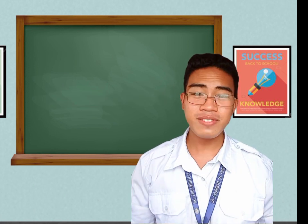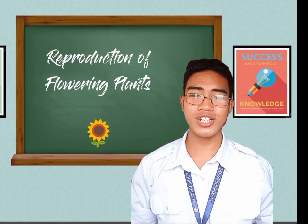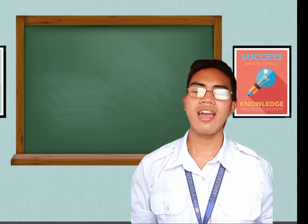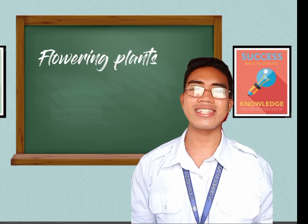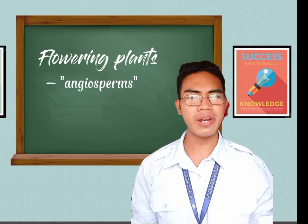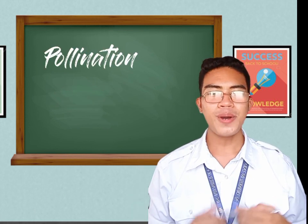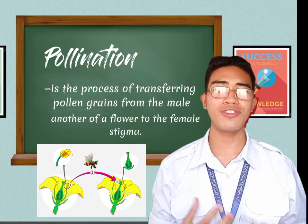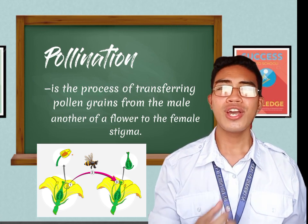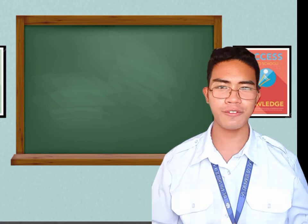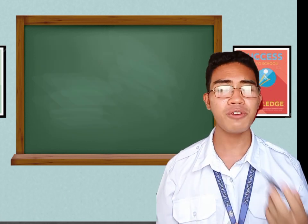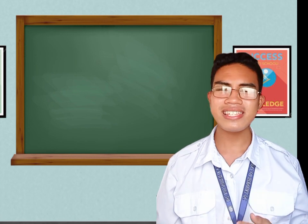Very good. Our previous topic is about the reproduction of flowering plants. Flowering plants are also called angiosperms — those plants that can bear flowers. Pollination is the process through which flowers reproduce, meaning they give birth to fruits and crops. Examples of flowering plants include lilies, lavender, daisy, hibiscus, and also known locally as gumamela. So much for that — before we proceed to our new lesson, please pay close attention.